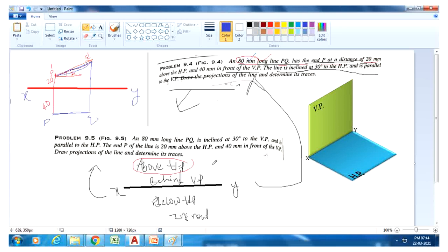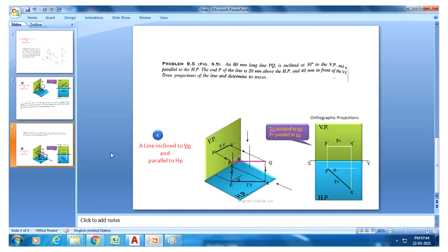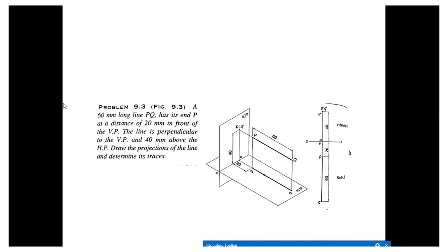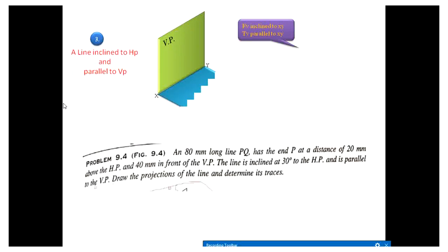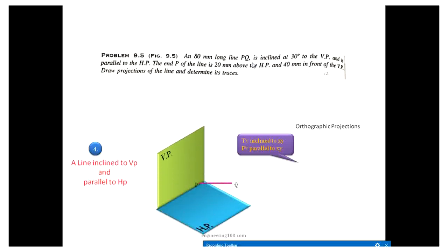Using this formula is enough. The next question is an 80mm long line PQ — this question is related to inclined to VP. The line PQ is inclined 30 degrees to the VP. This is the position of a line inclined to VP, where the line makes 30 degrees to the VP.